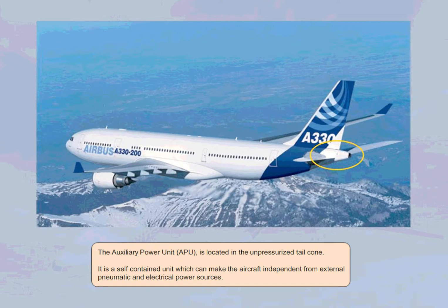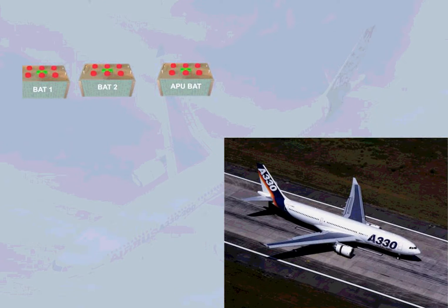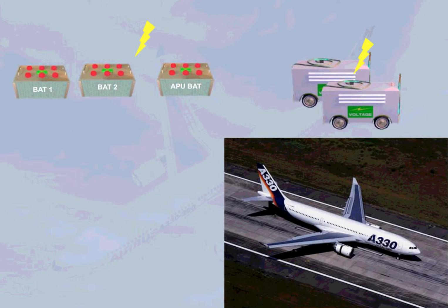The APU may be started using electrical power supplied by the aircraft batteries, the external power source, or the engine generator source.